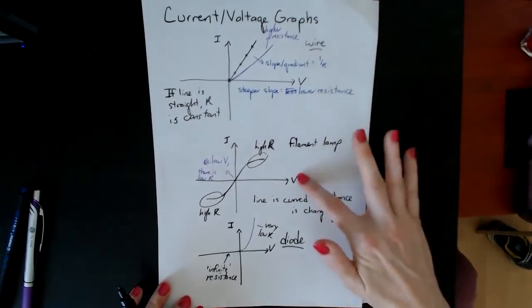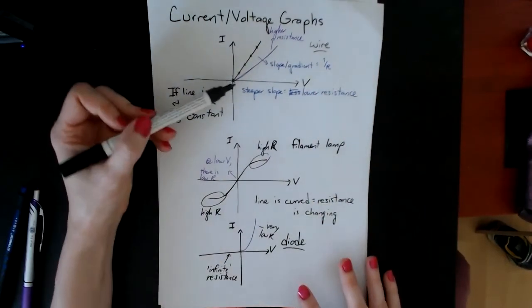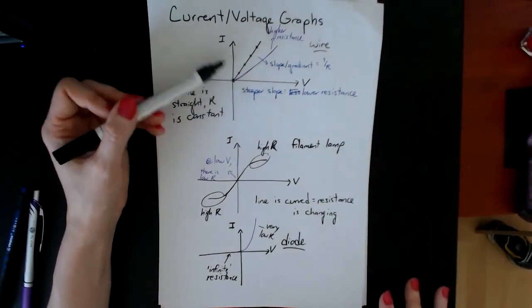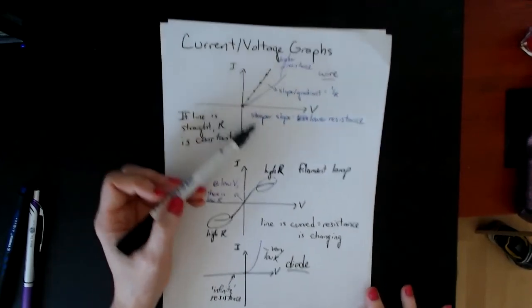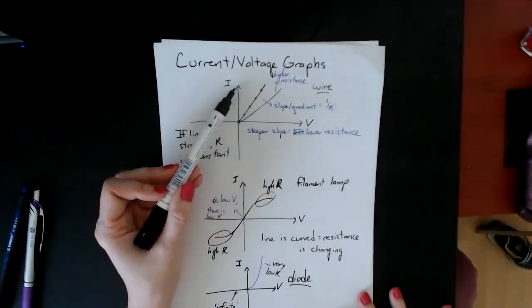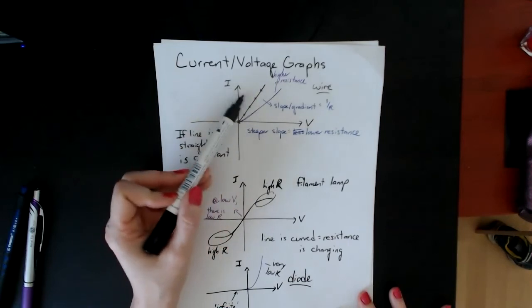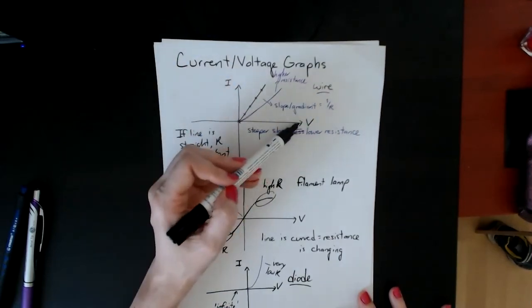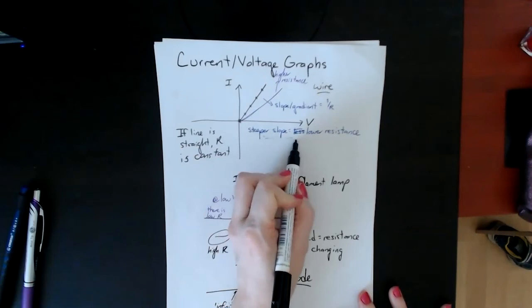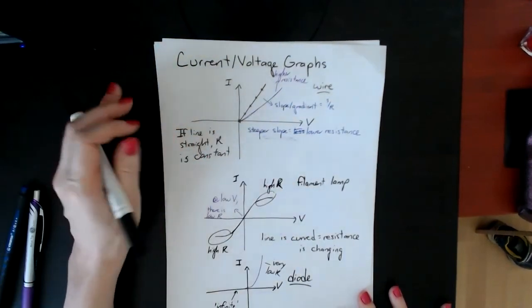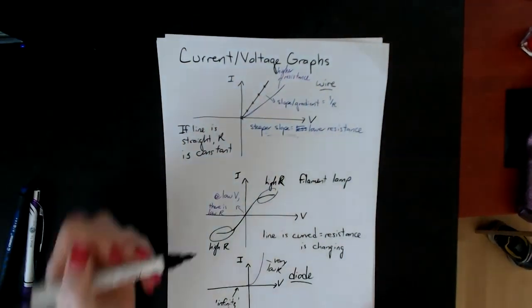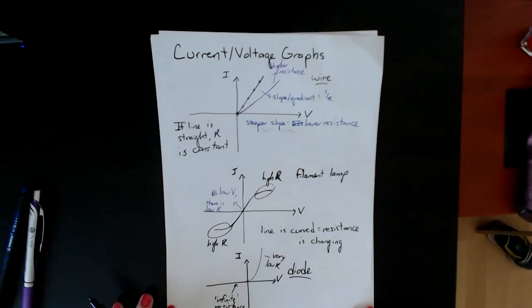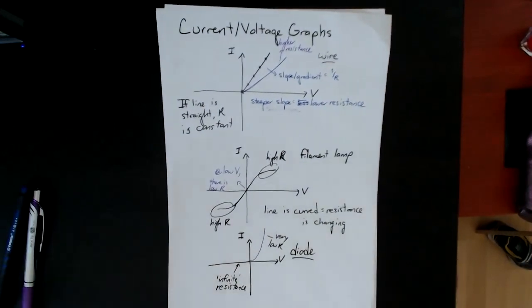Those are your three basic current-voltage graphs. You need to understand how slope tells you about the gradient. Please remember to always check your axes for these, because if they give you voltage here and current here, then this relationship becomes the opposite. In that case, a steeper slope would mean higher resistance.